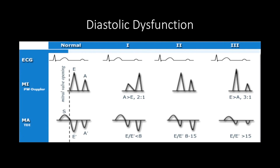Grade II diastolic dysfunction is also referred to as pseudonormal because the E and A waves on PW Doppler look very similar. However, this is when TDI can show the difference — the E' wave is abnormally low, less than 7 or 9 cm/s depending on whether the septal or lateral annulus is being assessed.